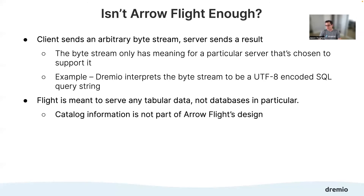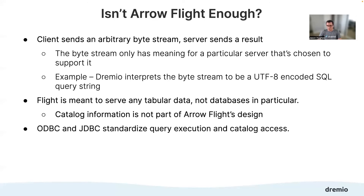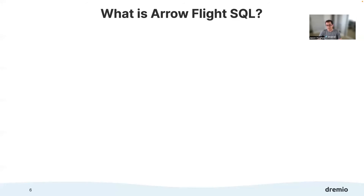In computing, there are very few completely net-new problems. A lot of times it's the same problems or 80–90% of the same problems in a new incarnation. ODBC and JDBC solve a very similar problem — they really standardize query execution and catalog access, as well as some other calls for each database. So let's steal that solution, as is usually the best approach. That's really where Arrow Flight SQL comes in — providing that standardization where it's not just an arbitrary byte stream, but you start building things on top of it to really enable database access and OLAP workloads.